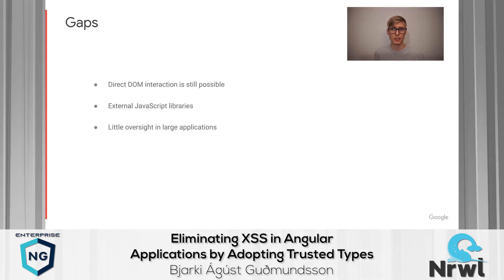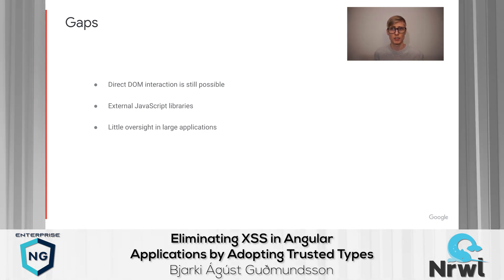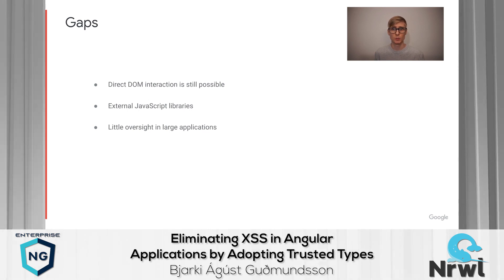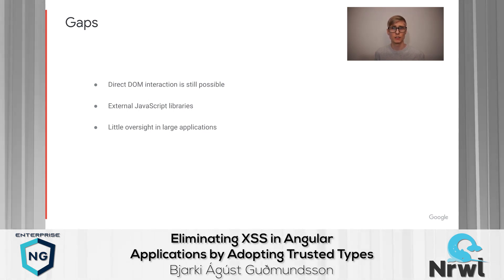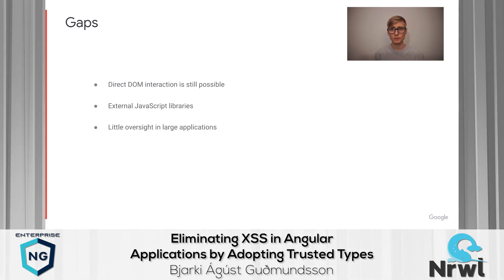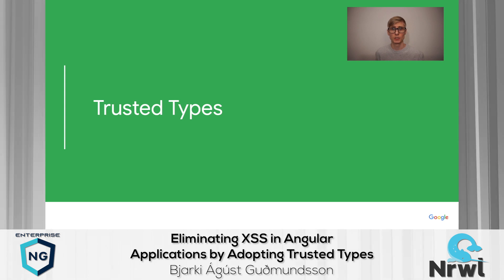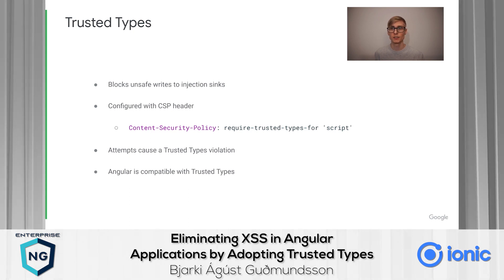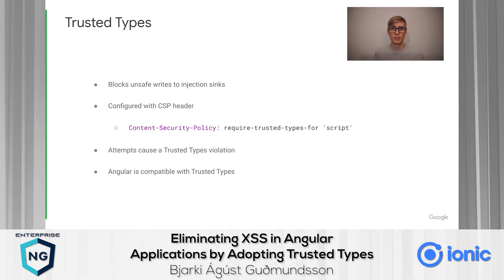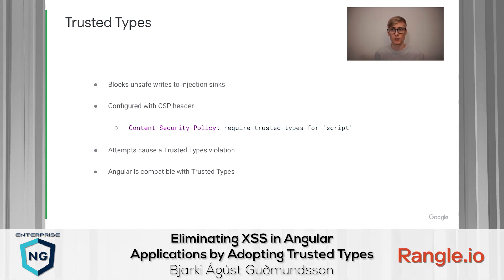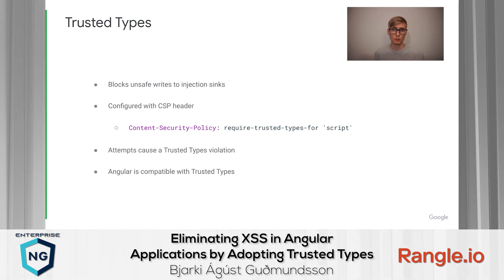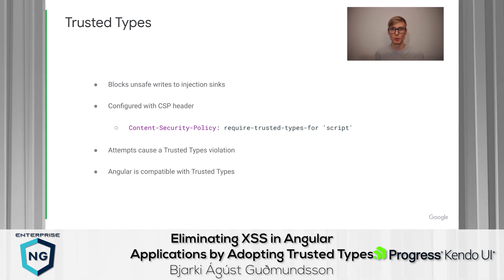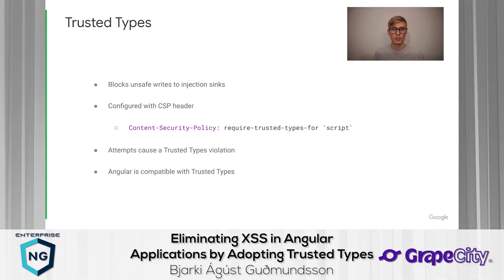External JavaScript libraries that the application depends on are also a common source of XSS vulnerabilities, as they frequently perform direct DOM interaction. Both of these points are especially true in enterprise-scale applications, where there is often little oversight over what code gets checked in. This brings us to the main subject, which is trusted types — a new web browser API that allows you to completely block write access to injection sinks. They are a CSP feature and are configured by serving a CSP header with required-trusted-types-for script. When enabled, any attempt at using an injection sink will be blocked by the browser, throwing an exception, also known as a trusted types violation.